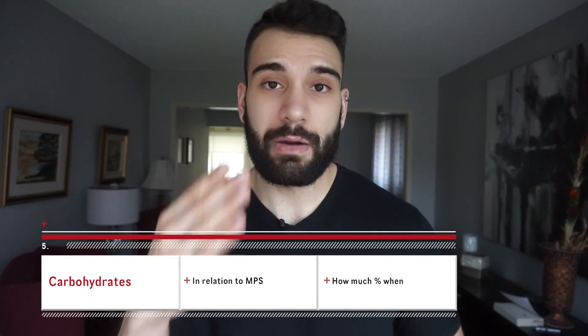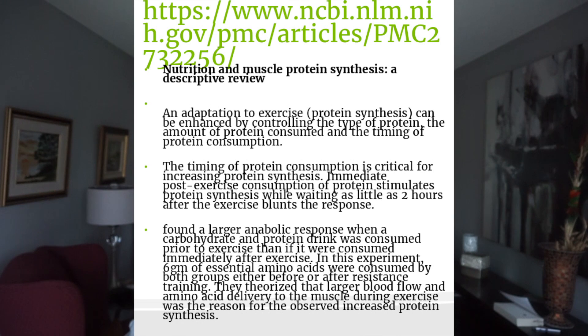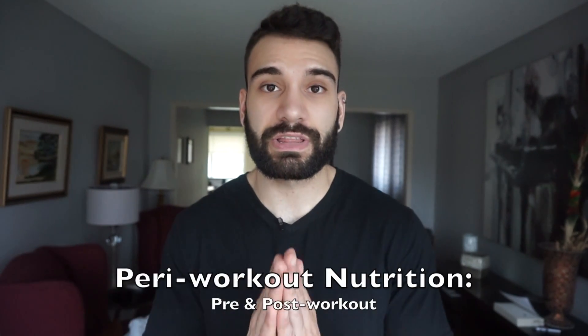Protein is king for post-workout, but carbohydrates have been shown to aid in protein absorption. Just as 50 grams of protein produces the max MPS results, 50 grams of carbs has been shown scientifically to produce the best results in terms of protein uptake. The ideal option is to take 50 grams of protein combined with 50 grams of carbohydrates both post-workout and before your workout — that is how you absolutely maximize and ensure you're in a hypertrophic state for around five hours surrounding your workout.